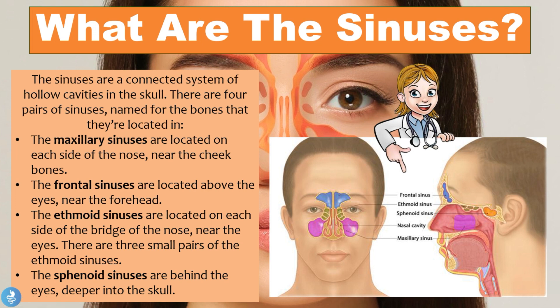Before we get into the specifics of sinusitis itself, let's take a closer look at what these sinuses are. The sinuses are a connected system of hollow cavities within the skull, and there are actually four pairs of sinuses named for the bones that they're located in. The first one is called the maxillary sinuses and they are located on each side of the nose near the cheekbones — a hollow cavity found within the maxillary bone.